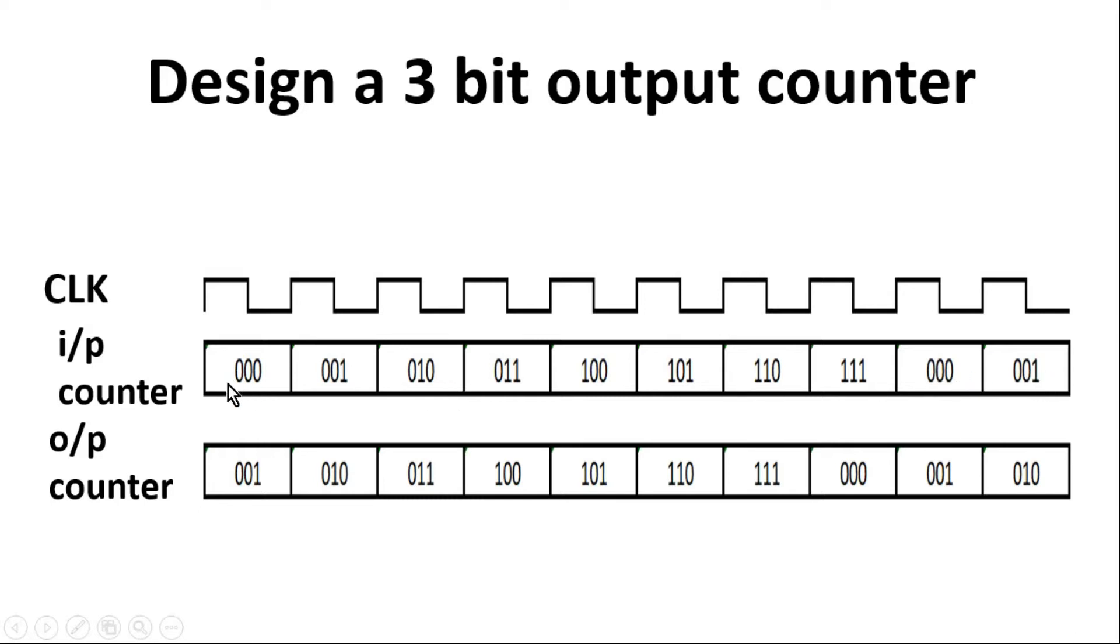Now friends, you have to design an output counter from this input counter which should run ahead in time. When the input counter is 000, it should have 001, and so on. This input counter can be a free-running counter or it may be counting any particular event.